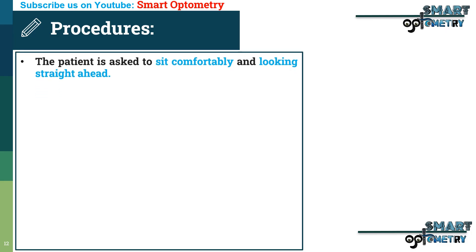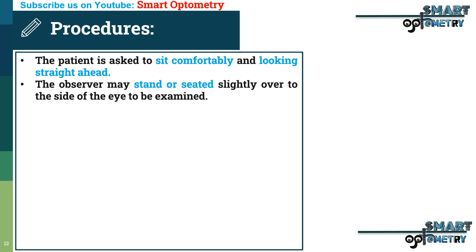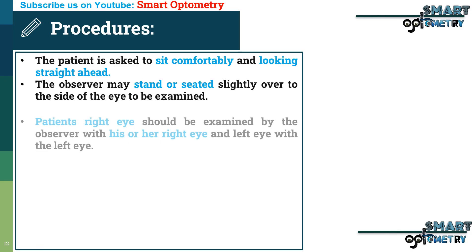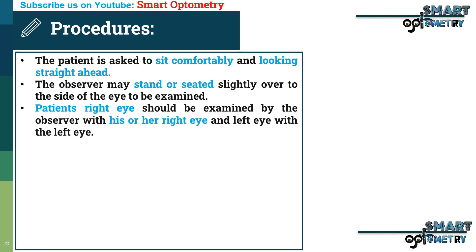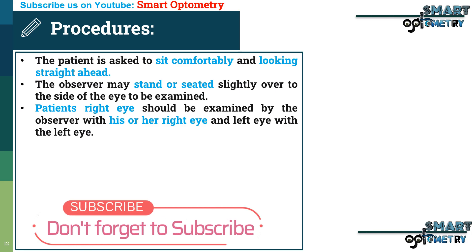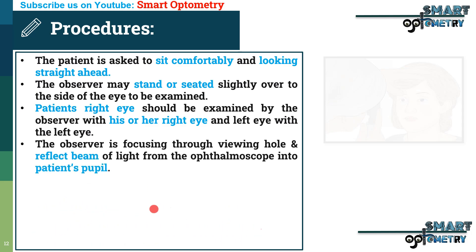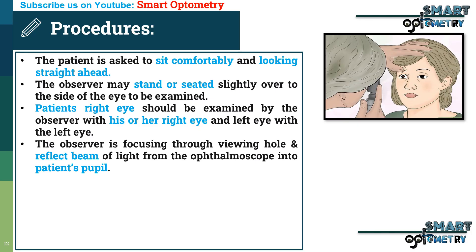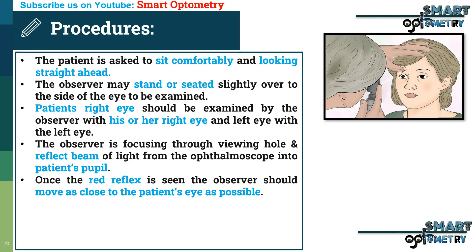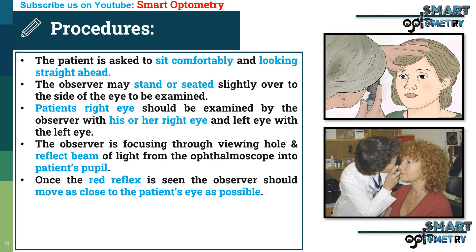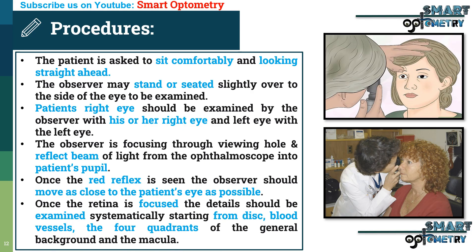Procedure: the patient is asked to sit comfortably and look straight ahead. The observer may stand or be seated slightly to the side of the eye to be examined. The patient's right eye should be examined by the observer with his or her right eye, and the left eye with the left eye. The observer focuses through the viewing hole and reflects a beam of light from the ophthalmoscope into the patient's pupil. Once the red reflex is seen, the observer should move as close to the patient's eye as possible. Once the retina is focused, details should be examined systematically starting from the disc, blood vessels, the four quadrants of the general background, and the macula.